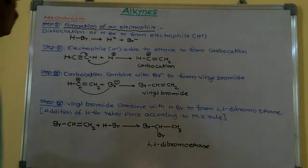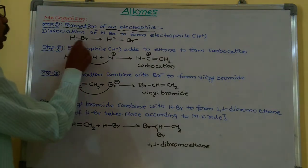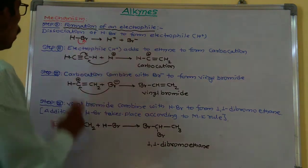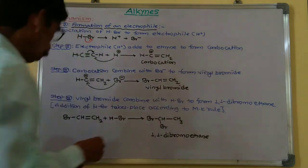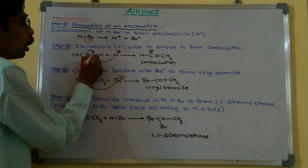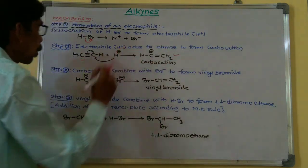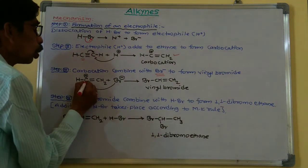So this is the terminal reaction — the first electrophilic addition of HBr. Now the mechanism of this reaction: Step 1 is the formation of an electrophile. HBr dissociates to form H+ and Br−. Step 2: the electrophile H+ adds to ethyne to form a carbocation. This H+ combines with one CH carbon, that carbon becomes negatively charged, and the other carbon becomes positively charged, forming a carbocation.